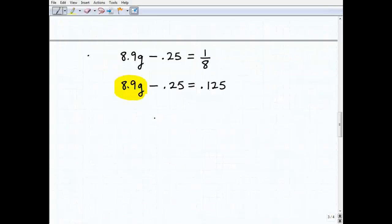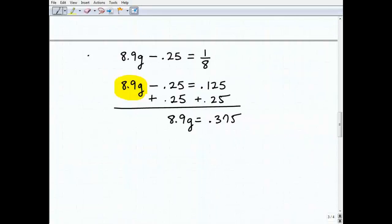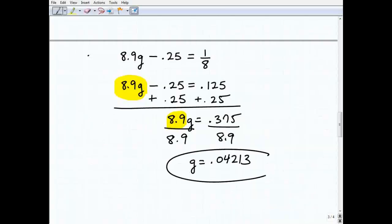Okay. So now let's isolate this variable term here. I'm going to add 0.25 to both sides of the equation and I get 8.9g equals 0.125 plus 0.25, which is going to be equal to 0.375. All right. So we have 8.9g equals 0.375. So to solve for g, I got to divide both sides of the equation by 8.9. So g is going to be equal to 0.375 divided by 8.9 and I get 0.04213 or so. And that's it.